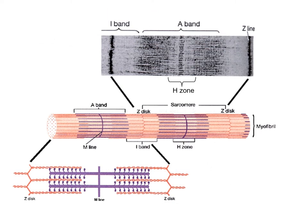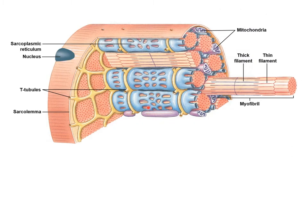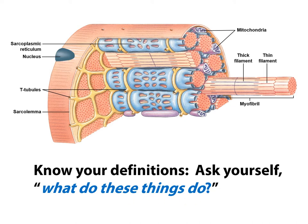I'll also remind you of the different bands and zones, because we need to understand the sliding filament theory of muscle contraction. These structures — the T-tubules, the transverse tubules, the sarcoplasmic reticulum, the mitochondria — are terms we've already seen. Now we're putting them in context of the cell. Ask yourself: what are these things doing as part of muscular function?